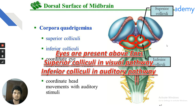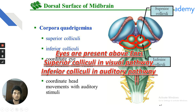Lateral geniculate body: L stands for light — involved in visual pathway. Medial geniculate body: M stands for music — involved in auditory pathway. You must know which structure belongs to which pathway. Use mnemonics: eyes above ears means superior colliculi for visual, medial geniculate body M for music means hearing. Use your own mnemonics to retain information better.